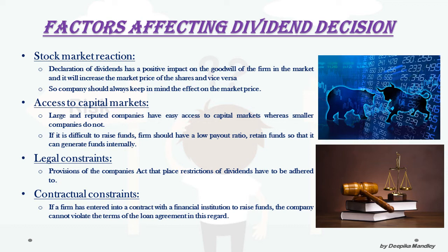Regarding access to the capital market: large and reputed companies have easy access to the capital market, so they do not have to keep much as retained earnings — whenever they require funds they can easily raise them from the capital market. Smaller companies do not have such access, so they have to focus more on retained earnings. If it is difficult to raise funds, a firm should have a low payout ratio and retain funds so that it can generate funds internally.